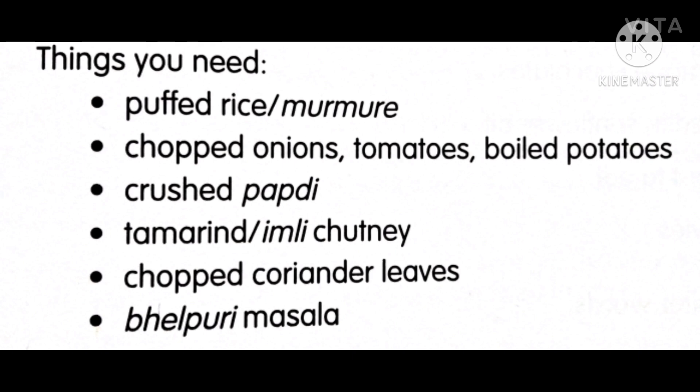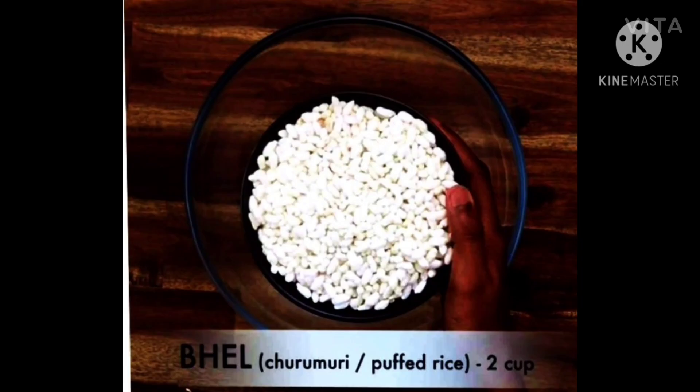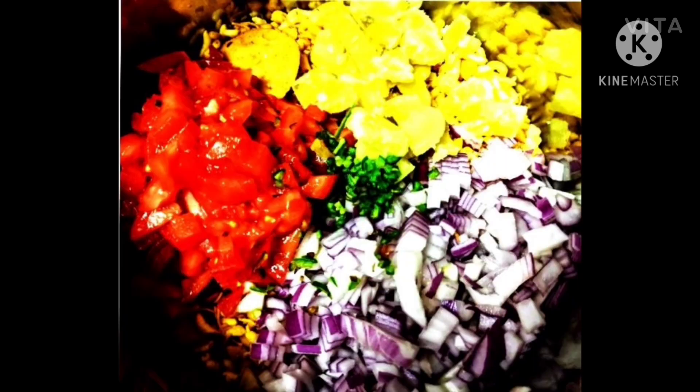Let us follow the steps and instructions to prepare it. First, take puffed rice in a bowl — they are called murmuri or bhel. After taking the puffed rice in a bowl, add all the chopped onions, tomatoes, and boiled potatoes. If you want, you can also add some chilies or coriander.